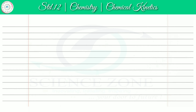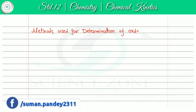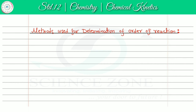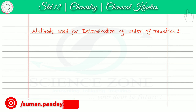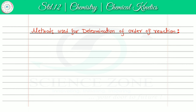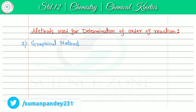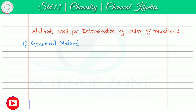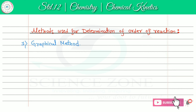Our next topic is methods used for determination of order of reaction. We are going to discuss five different methods. The first method is the graphical method. In the graphical method, we have chemical kinetics information in the observation table or data, which we have in different graphs drawn at different intervals of time.